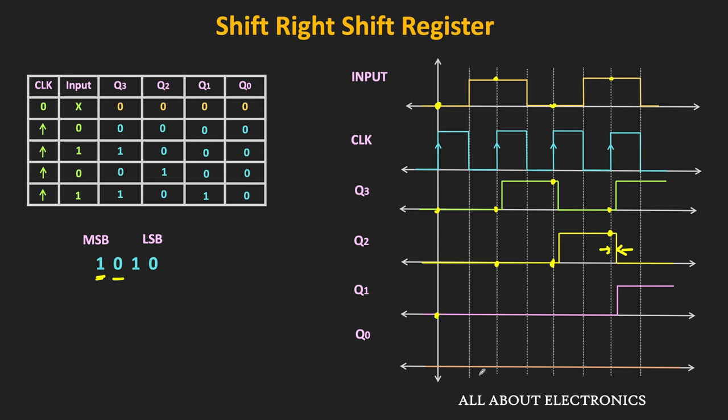This is all about the shift-right type of shift register. Similarly, we can also have the shift-left type of shift register, where the data is entered from the right side and moves towards the left side. In this case, the input is applied from the LSB of the register while the output is taken from the MSB.